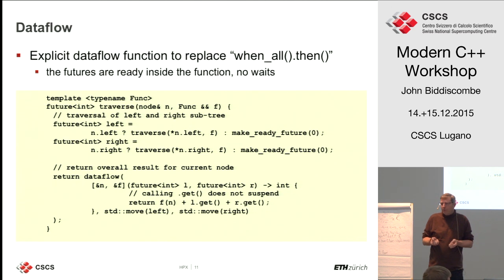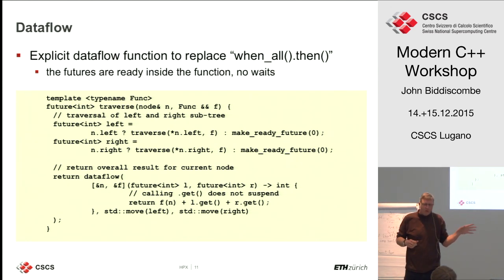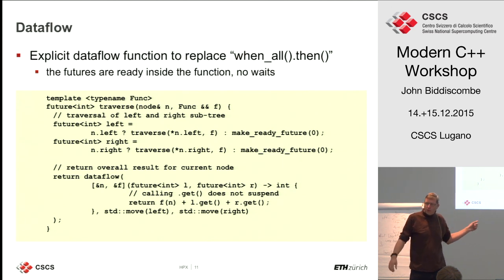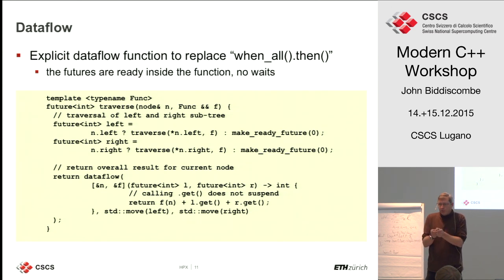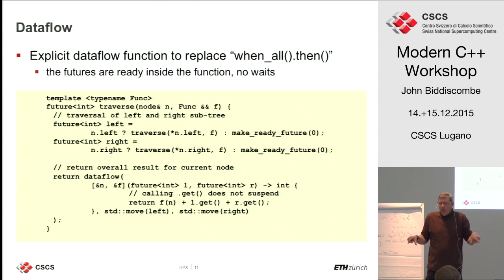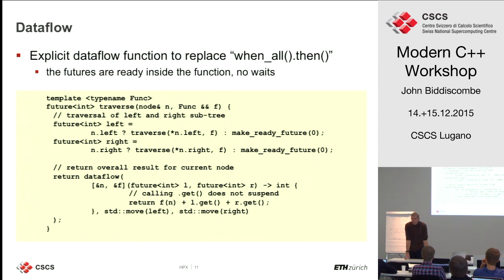If you used standard threads recursively on a tree eight deep, you'd get 2^8 = 256 real OS threads being created, which would really be a problem because they take up resources. That's why the standard async example took 300 milliseconds versus 4 milliseconds with deferred. The deferred standard call is cheaper, and with HPX it's another order of magnitude cheaper than that because it's essentially just a function pointer.